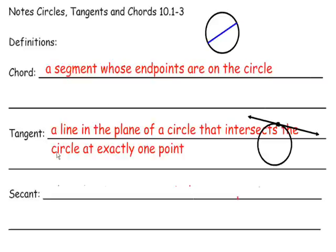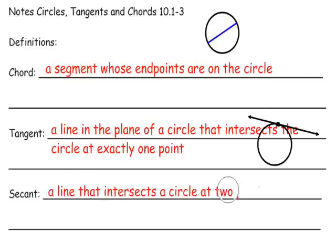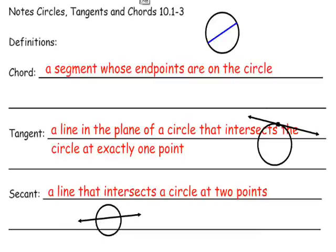A secant is a line that intersects a circle at two points. A chord is part of a secant. The difference between a secant and a chord is that the secant goes through the circle, whereas a chord just has both endpoints on the circle. That line would be a secant — it intersects at two points.